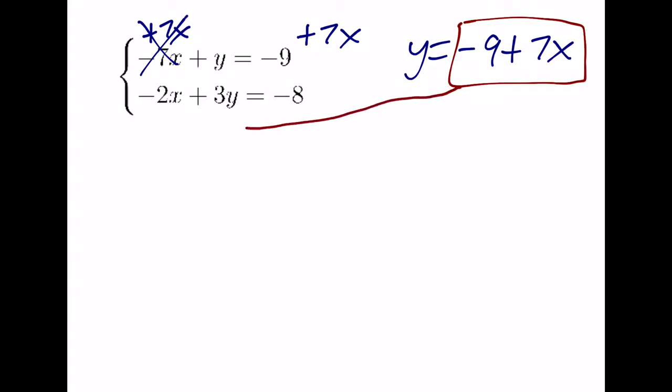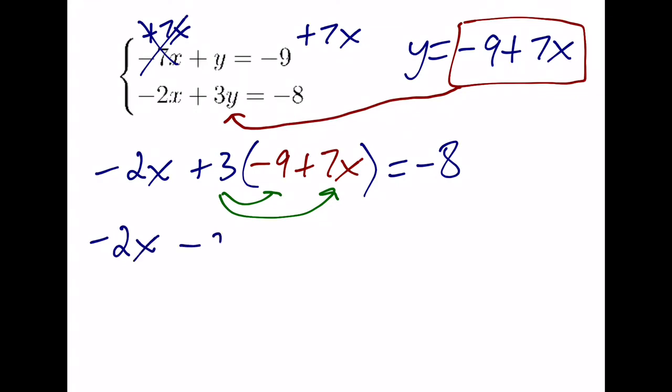And we can take what y is equal to and plug it into the other equation. Negative 2x plus 3 times the quantity, negative 9 plus 7x is equal to negative 8. From here, we're going to distribute this positive 3, which means we multiply it by each term inside of the parentheses. So negative 2x minus 27 plus 21x is equal to negative 8.